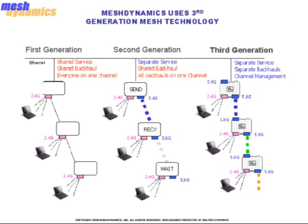Since all devices are on the same channel, only one device can transmit at a time, else there will be interference on the network. This is a very inefficient process, which equates basically to walkie-talkie technology. If multiple hops are required in the network, there will be a severe degradation in bandwidth as the number of hops increases.